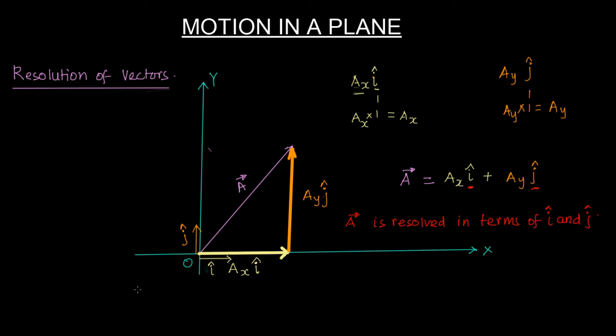Any vector in the plane can be so resolved. Let's draw a coordinate system with x and y axes, marking units: 1, 2, 3, 4, 5 along positive x; -1, -2, -3, -4, -5 along negative x; and similarly along the y-axis.